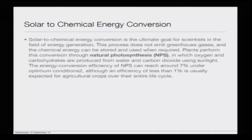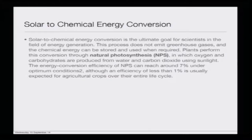Solar to chemical energy conversion is the ultimate goal for scientists in the field of energy generation. This process does not emit any greenhouse gases, and the chemical energy can be stored and used when required in the form of hydrogen. Plants perform this conversion through natural photosynthesis, abbreviated as NPS, in which oxygen and carbohydrates are produced from water and carbon dioxide using sunlight. The energy conversion efficiency of NPS can reach around 7% under optimum conditions, although less than 1% is usually expected for agricultural crops over their entire life cycle.